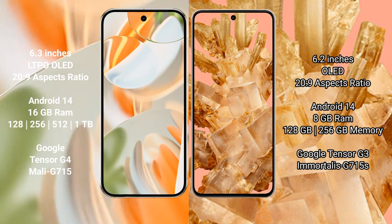Both the Google Pixel 9 Pro and Asus ROG Phone 8 run on the Android 14 operating system. The Google Pixel 9 Pro comes with 16 GB RAM and storage options of 256 GB or 512 GB internal storage.